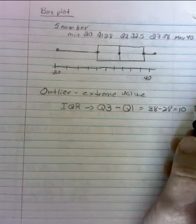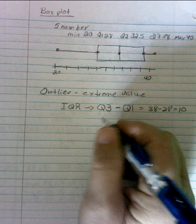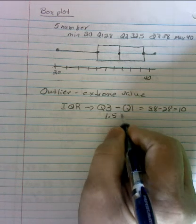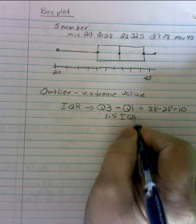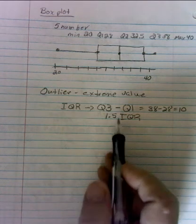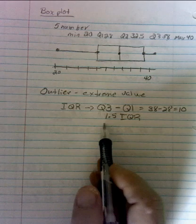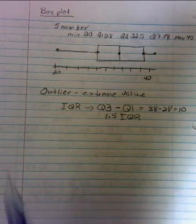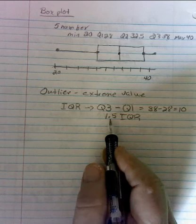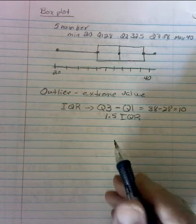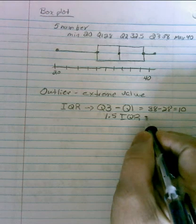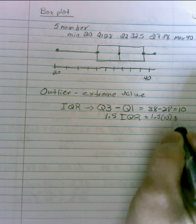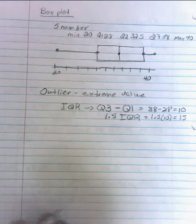And then we use that to calculate a value. And we always do 1.5 times the IQR. Now there are some people that use a different value than 1.5. Some people might use 2.5. But this generally is the same value in most lines of statistics.